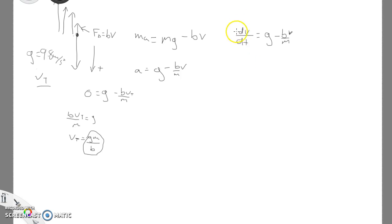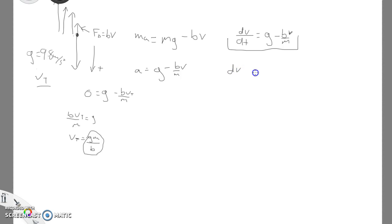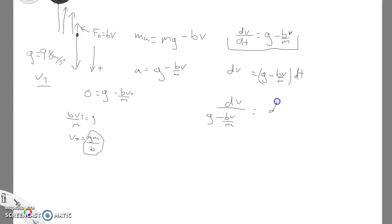On the AP test you'll see situations where it asks you to set up a differential equation — here we're showing that the change in velocity is dependent on velocity itself. To solve it, our goal is to get all the t's on one side and the v's on the other side: dV equals g minus (B/M)V times dt. Dividing, we get dV over (g minus BV/M) equals dt. We then integrate the right side from 0 to t, and the left side from v-naught to V.